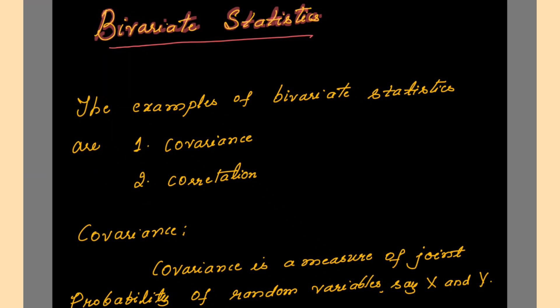Hello viewers, welcome to the video lecture series on machine learning. Today's topic of discussion is covariance and correlation. These two topics come under bivariate statistics. The different statistical operations that can be performed on bivariate data are: covariance is the first one and correlation is the second one. Let us see these two statistical measures in detail.